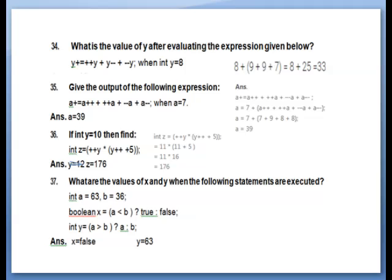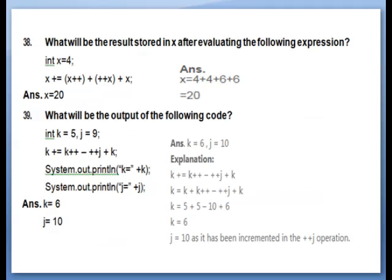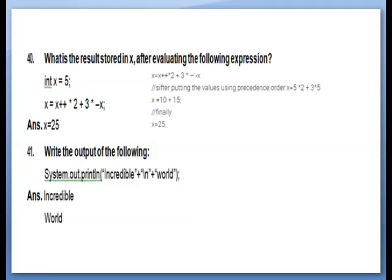Students, questions 34 through 37 with their explanation parts are on the right side — you should try to solve all of them; they are already solved so review them. Questions 38 and 39 with answers and explanations are also here. Question 41: System.out.println of 'incredible' then slash n — slash n means the next word goes to the next line. The next word is 'world', so the answer is 'incredible' on one line and 'world' on the next.